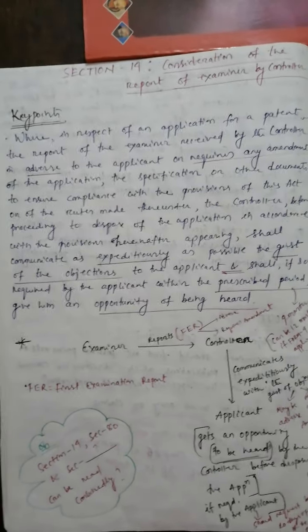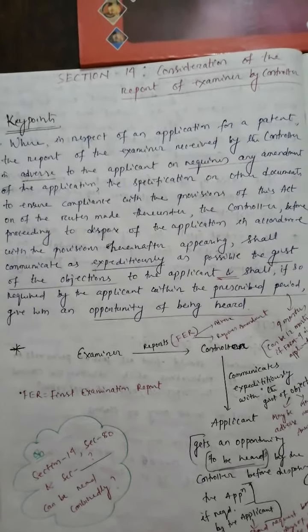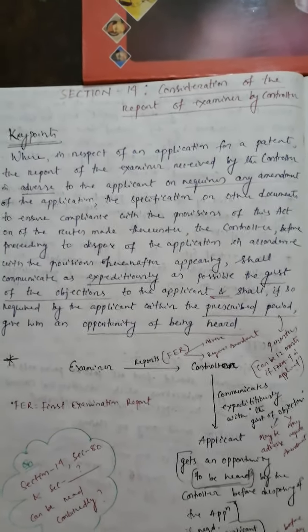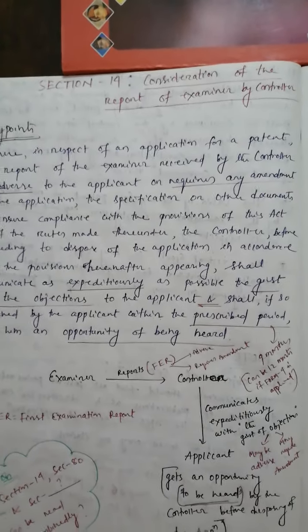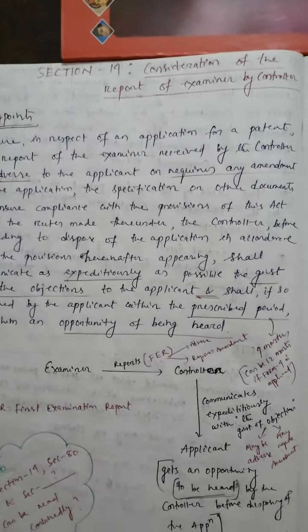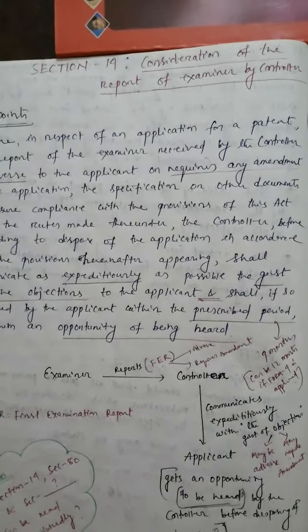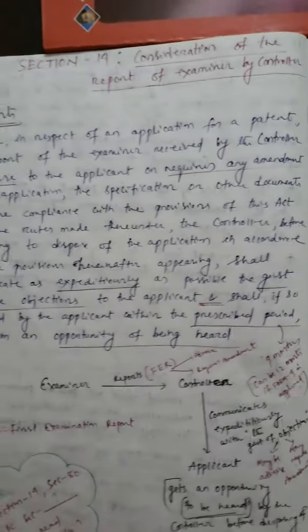Good morning friends. Today I will explain Section 14 of Chapter 4 of the Indian Patent Act, or the Patents Act 1970. Section 14 is about consideration of the report of examiner by the controller — that is the title of this section: consideration of the report of examiner by the controller.